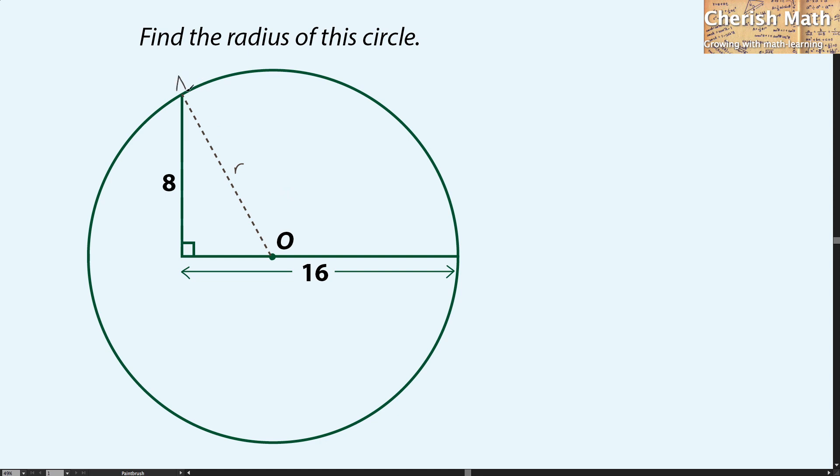This triangle OAB is in right angle. So for this distance I will have to use 16 minus R.